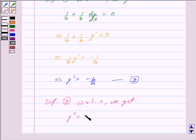Since -B/A is a constant, its derivative is 0. So we get y'' = 0, and this equation does not contain the constants A and B.